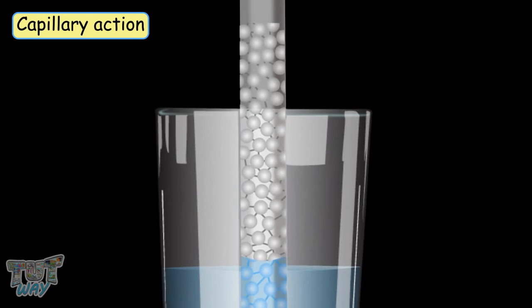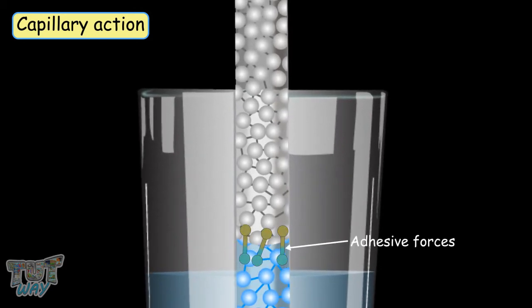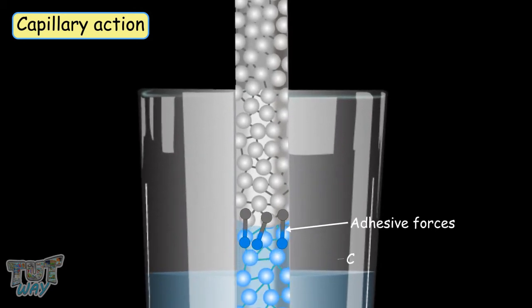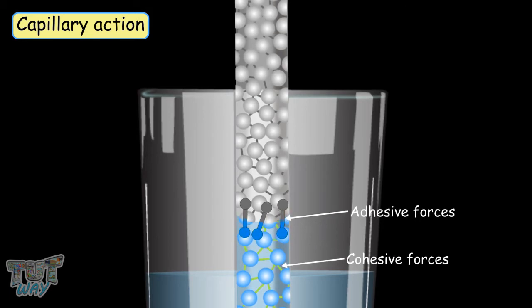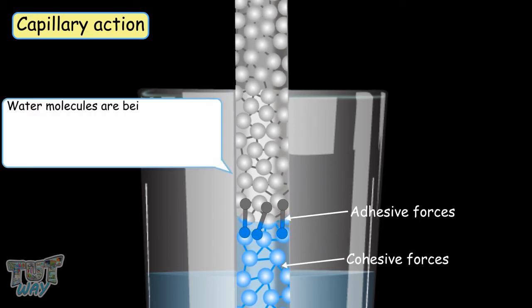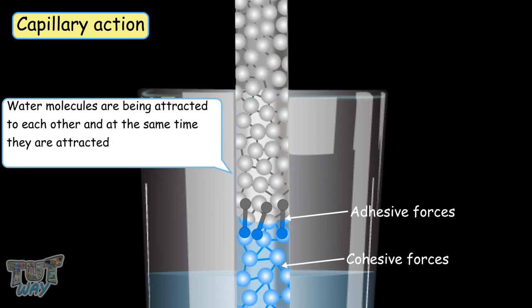Capillary action occurs when adhesive forces become stronger than cohesive forces. That is, the water molecules are attracted to each other and at the same time they are attracted to the molecules of the inner surface of the tube, for example a straw. But the force of attraction towards the straw is more. So the water molecules travel up along the inner surface of the straw.